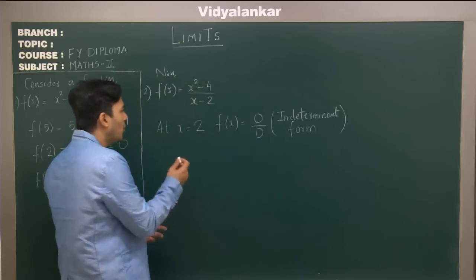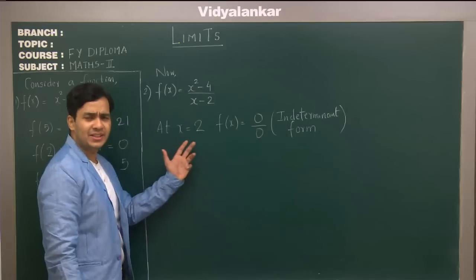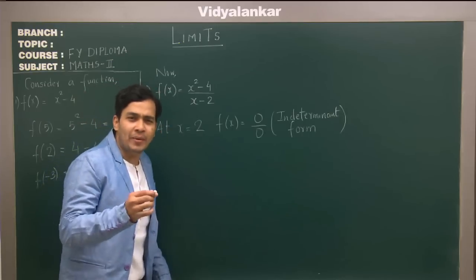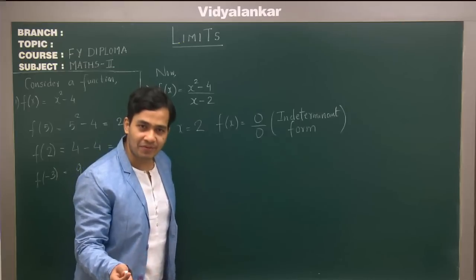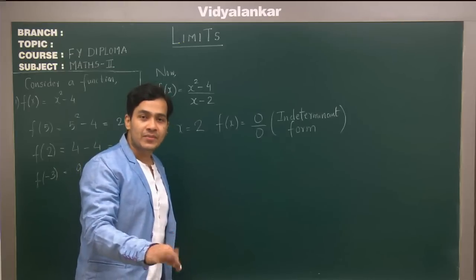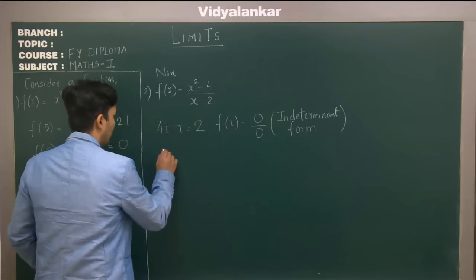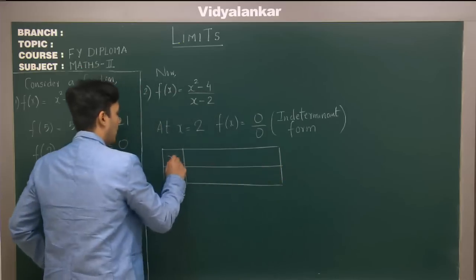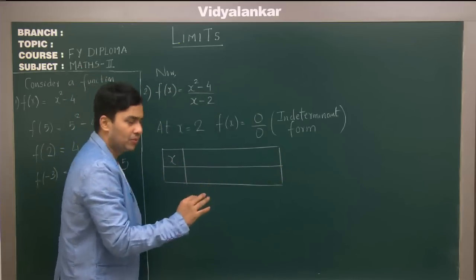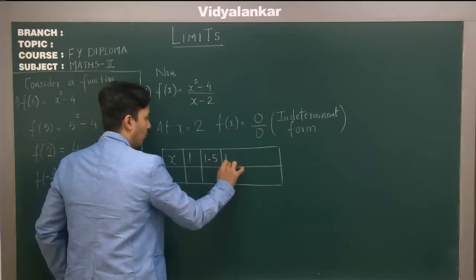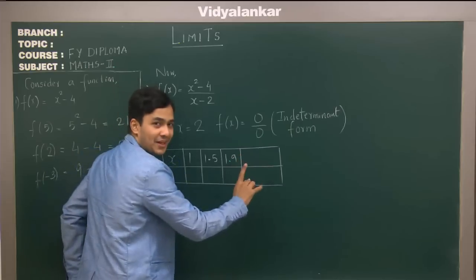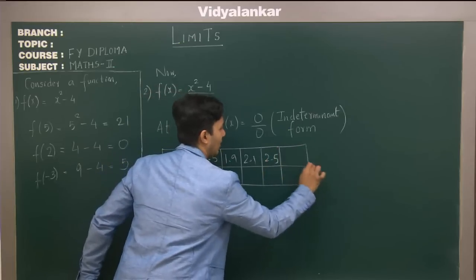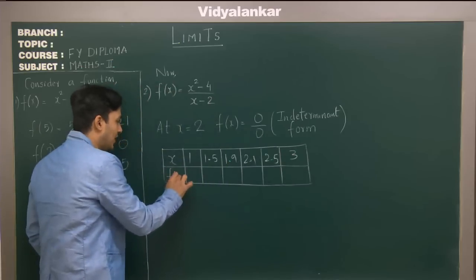So how do you actually deal with this when x is 2? You can't put x = 2 directly. Instead, let's put values of x closer and closer to 2 but not equal to 2 — values like 1, 1.5, 1.9 from the left and 2.1, 2.5, 3 from the right — and see what happens to the function value.